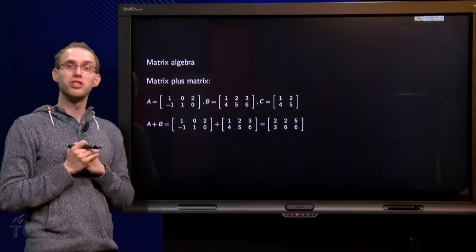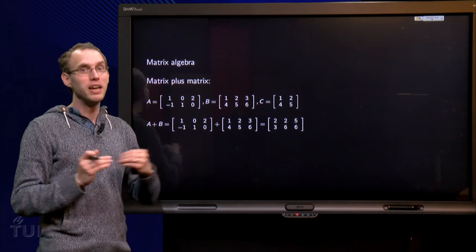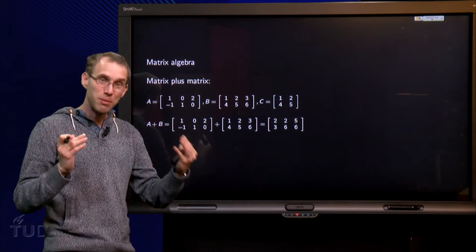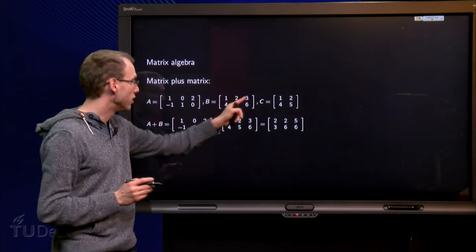But first we start with the addition of two matrices. You can only add two matrices if they have the same size. So here we have A the 2 by 3 matrix, B 2 by 3 and C 2 by 2.